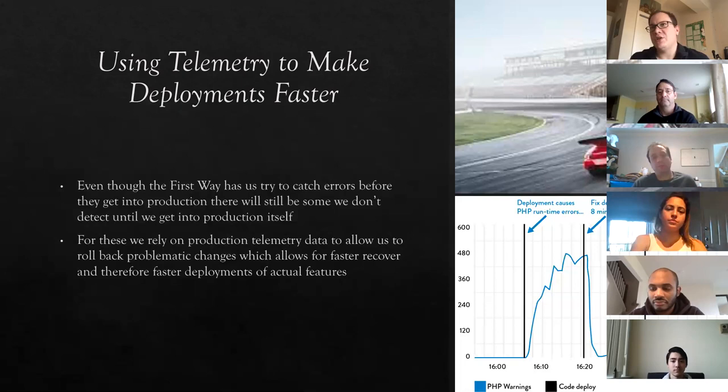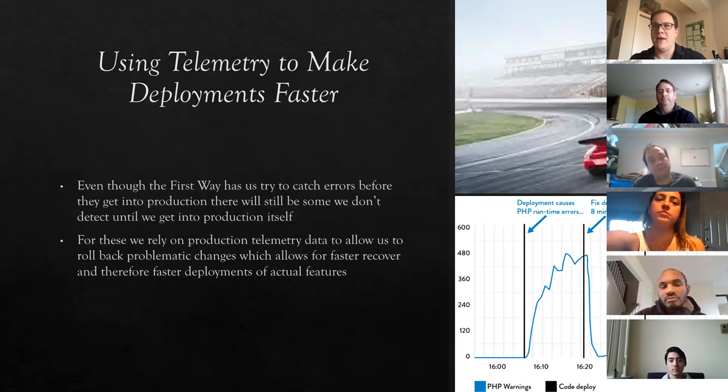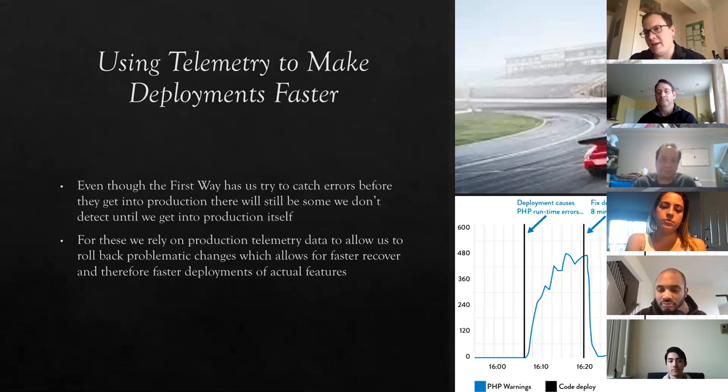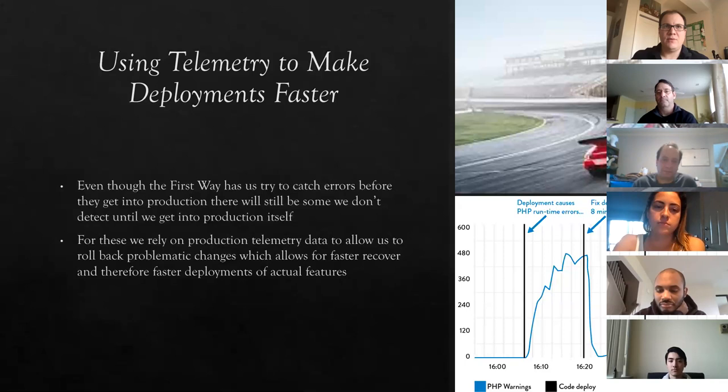For example, somebody pushed a change that immediately started causing errors in the log. Because the developer had access to that log and was able to look at this information right after the deployment, they were able to quickly see something was pretty messed up and roll it back. By having that kind of information and depth of understanding, developers are able to actually get the features they want up in production and working faster.